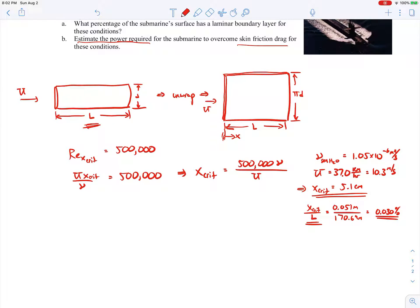So since we're going to find the power, the power will be the drag due to skin friction times the velocity of the submarine. And then we need to find what the drag force is. The drag force will be the skin friction drag coefficient times the dynamic pressure based on the free stream velocity times the area over which it acts, which will be the L times pi times D. That's this area of the outer surface of the submarine.